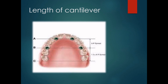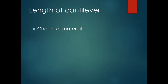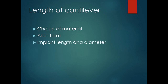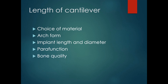Other than AP spread, many factors influence the length of the cantilever: choice of material, arch form (the tapered arch form has a larger anterior-posterior spread and can handle longer cantilevers), implant length and diameter (wider and longer implants can withstand longer cantilevers, and length is more significant than width), and parafunction. In patients with parafunctional habits like bruxism, it is advisable to limit the cantilever extent. Bone quality also matters — cantilever length should be reduced by 6 to 8 mm to compensate for poor bone quality, especially in the maxillary posterior region.